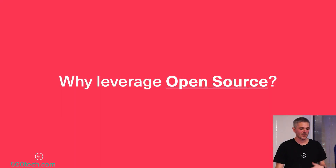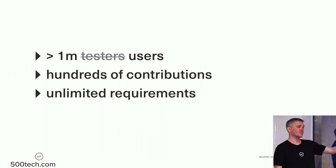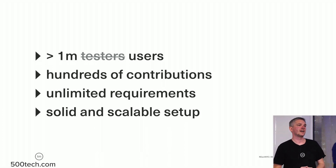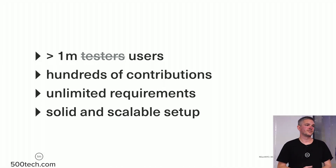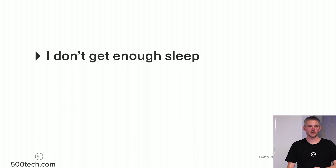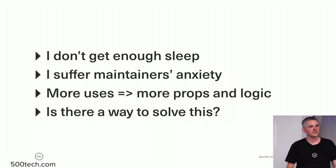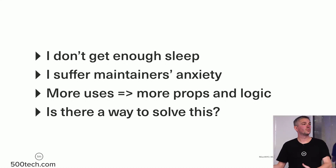The question came up: why would we leverage open source to do this? Well, first of all, we have a million testers — that's pretty cool. We have hundreds of contributors, unlimited requirements. We also have a solid and scalable setup and a really active community that's been helping drive maturity into this project for years. There are some challenges, but we thought: what if there's a way to solve this? How can we rethink the architecture of the component to solve the problems I've outlined and also bring forward all of the goodness present in this project?